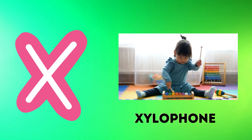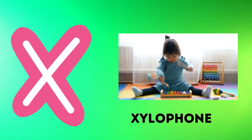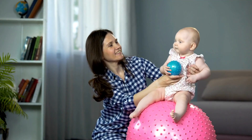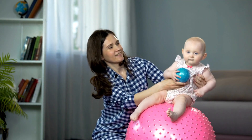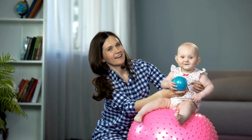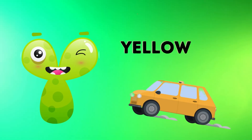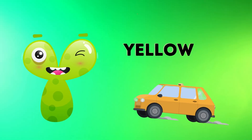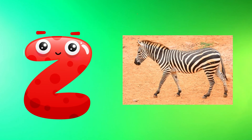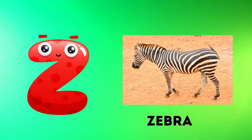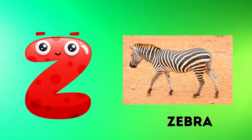X is for xylophone, z-z-xylophone. Y is for yellow, y-y-yellow. Z is for zebra, z-z-zebra.